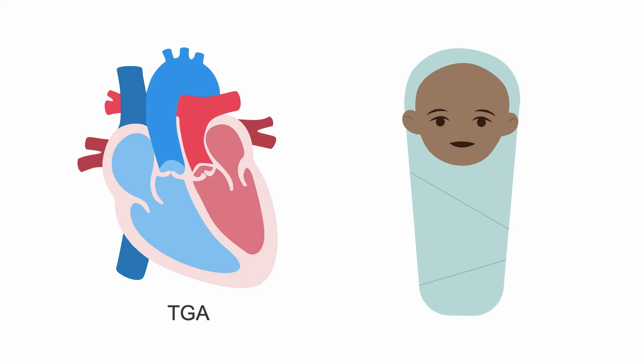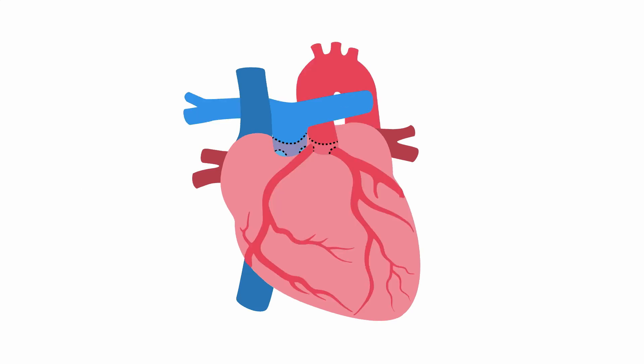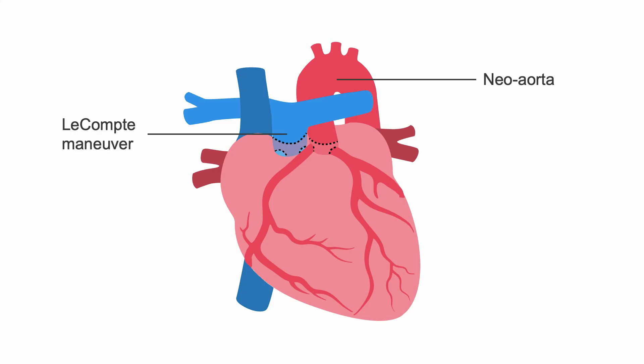TGA requires cardiac surgery in the first week or two of life in the form of an arterial switch operation. This is a complex surgical operation where the aorta and pulmonary arteries are incised above the semilunar valves and switched to the anatomically correct positions. The coronary arteries are re-implanted into the aorta, now known as the neo-aorta, and the branch pulmonary arteries are brought in front of the aorta during the part of the surgery known as the Lecomte manoeuvre.